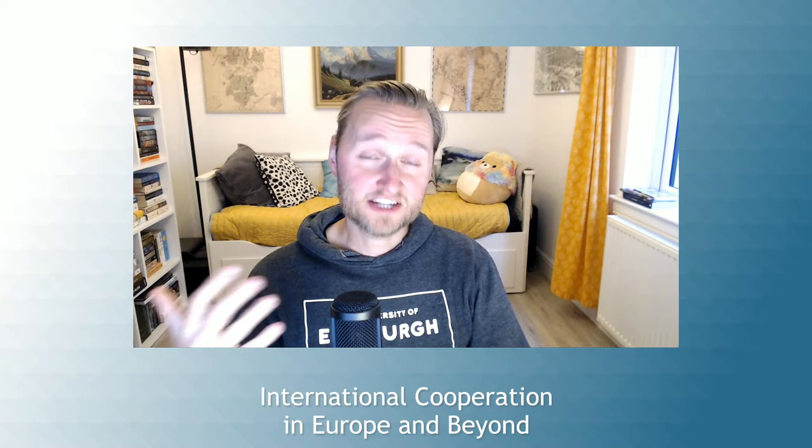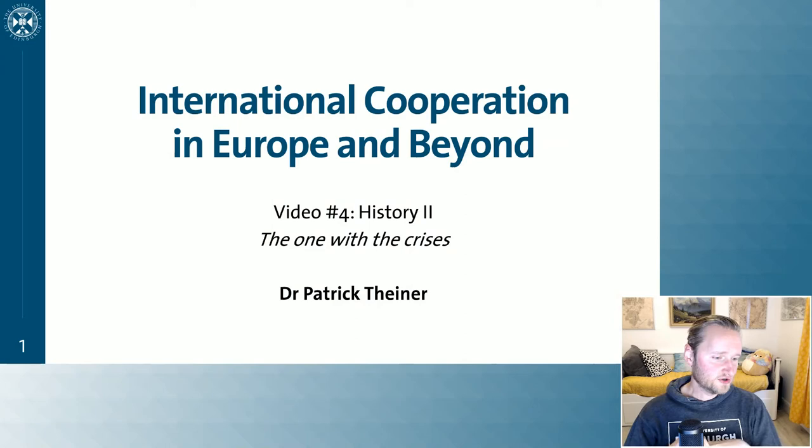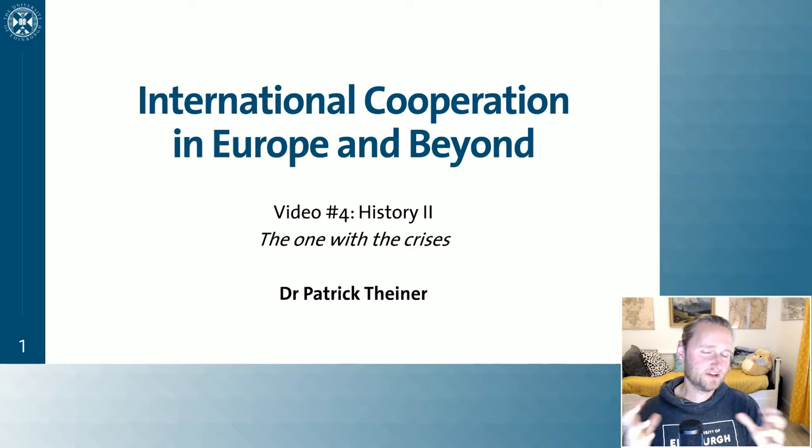We ended with the First World War, which we found out was this cataclysmic collapse of a relatively stable order in Europe that had come out of the Congress of Vienna. The Congress of Vienna was really the expression of Europe searching for a stable order, and that had gone well for almost 100 years until it catastrophically broke down with the outbreak of the First World War. And because I went a little overlong with the last one, I'll keep this one a little bit shorter.